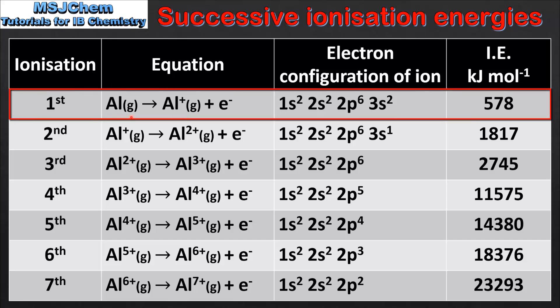The first ionization of aluminium involves the removal of 1 mol of electrons from 1 mol of gaseous atoms to form 1 mol of gaseous 1+ ions. If we look at the electron configuration of the ion formed, we can see that we've lost the 1 electron in the 3p sub-level, and the ionization energy is 578 kJ per mol.